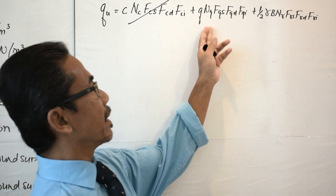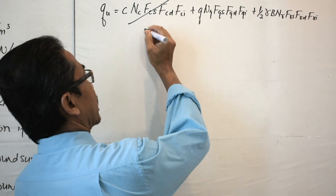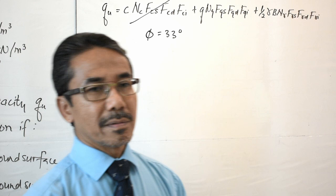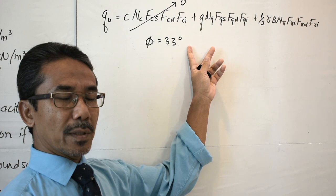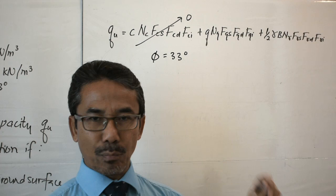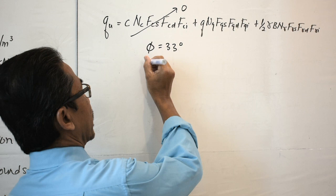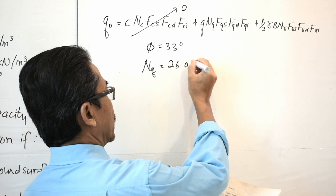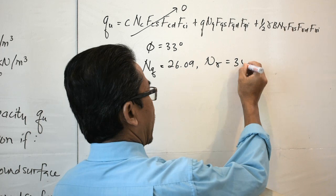Using Meyerhof-Hansen's general equation for ultimate bearing capacity, since c = 0, the c term cancels out and becomes zero. We focus on the q term and gamma term.